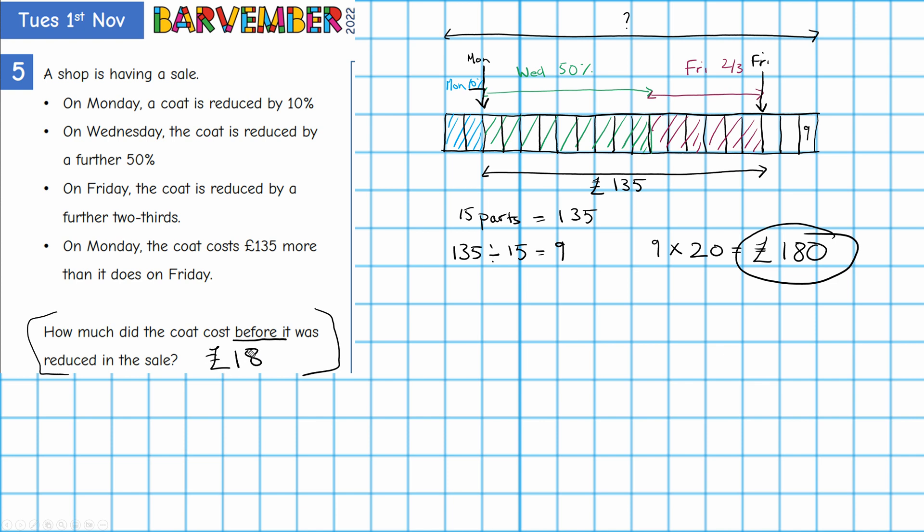So I want 9 times 20 which gives me £180. I'll put that in here. Okay, that's it. I hope it helps.